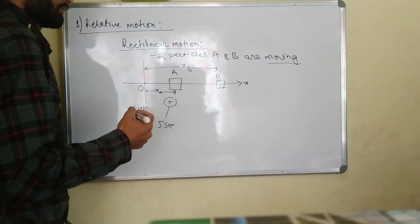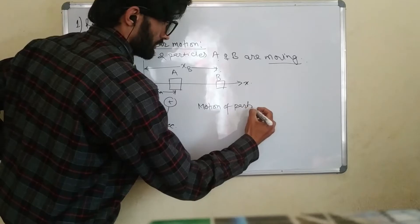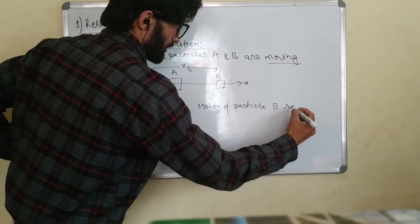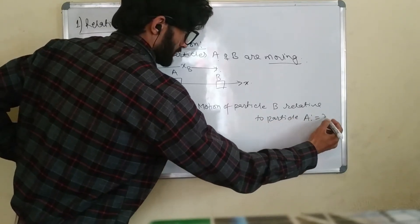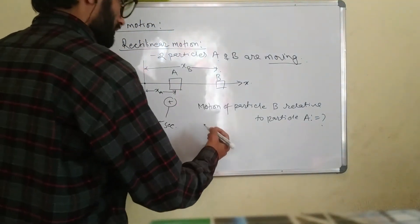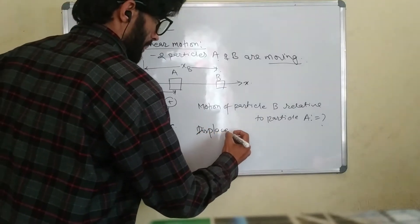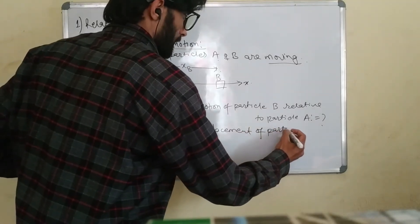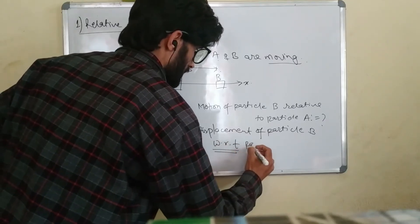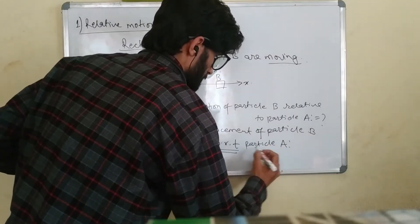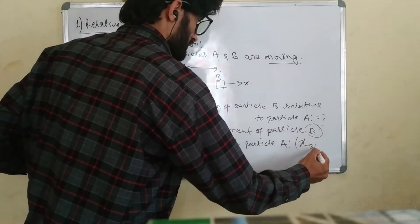So this is motion related to each other — motion of particle A, motion of particle B. Particle B is related to particle A. So the displacement of particle B with respect to particle A — x_B with respect to A — is the displacement of particle B with respect to A.